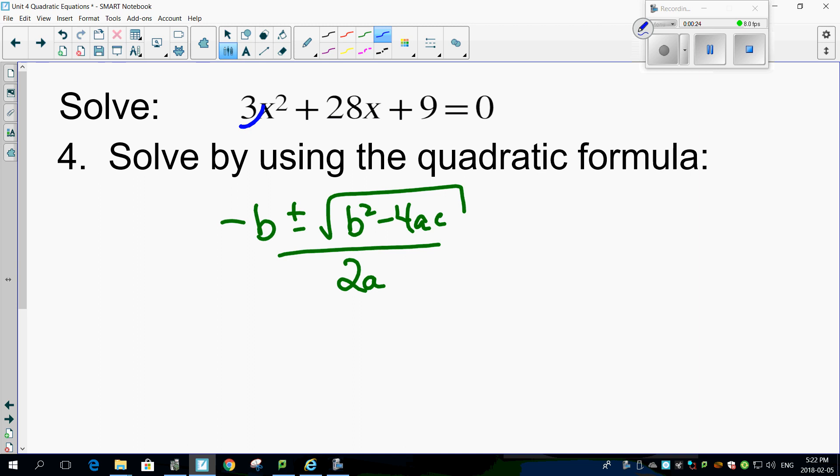Here's our a value. Here's our b value. Here's our c value. Okay, easy peasy. Let's go to town.